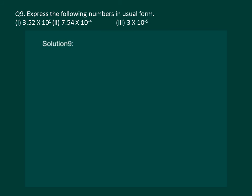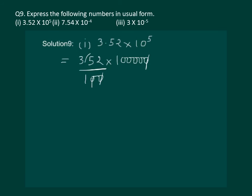Let us read the question on the slide: Express the following numbers in usual form. That means this time we are given the numbers in standard form and we have to convert them back to the usual form. Let us start. We can write this as 3.52 multiplied by 1, 2, 3, 4, 5 zeros. On solving, we get 3,520,000, and this is the required answer.